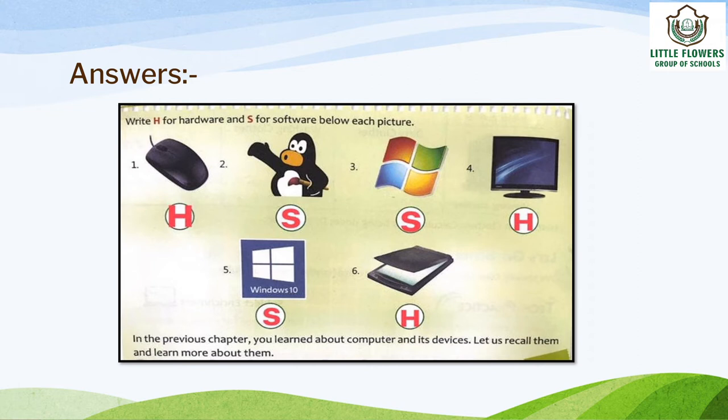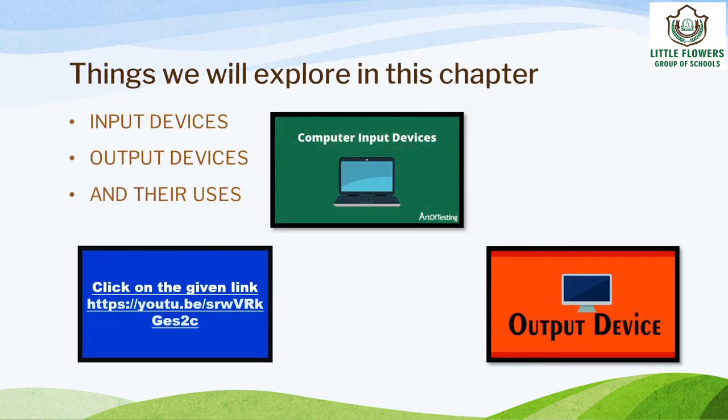So these are the answers. Mouse is a hardware device. Text Paint, Window, and Windows 10 are software. A printer and a monitor are hardware devices. Now, the things we will explore in this chapter are input devices, output devices, and their uses.